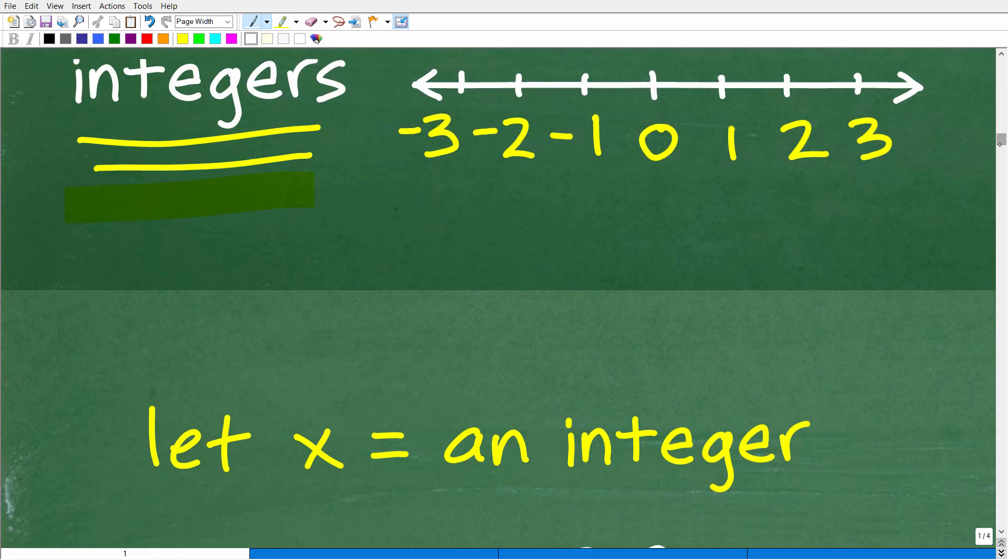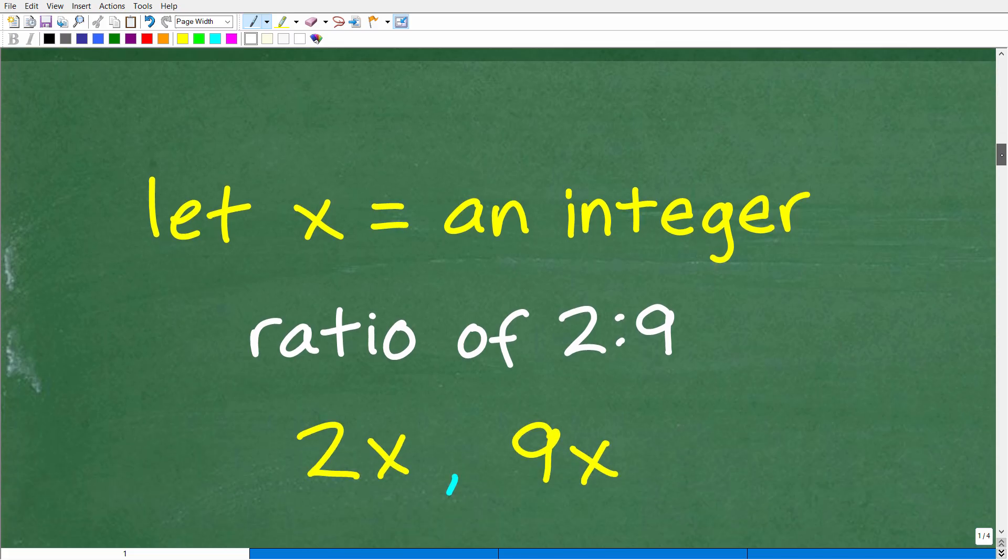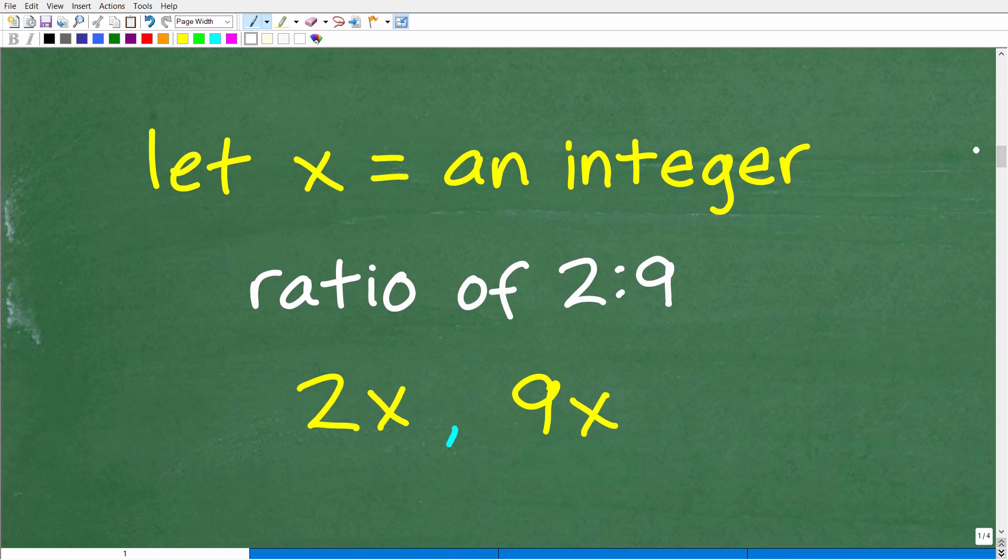All right, so now let's go ahead and get started on trying to build an equation here. But before we build an equation, we need a variable. So I'm going to let x represent an integer. Now, there's different ways you can go here to solve this problem. But if you're not quite sure, like if you said, well, I'll let x represent the smaller, the lesser of these two integers. Well, we're going to run into this situation right here that the ratio of these integers are two to nine. So it's better in this circumstance to just let x equal an integer.